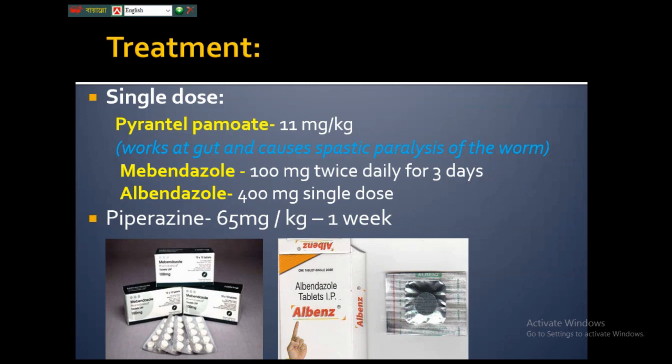For treatment, pyrantel pamoate at 11 mg/kg body weight is a very good drug. Alternatively, mebendazole 100 mg twice daily for three consecutive days can be used. The most common drug is albendazole 400 mg as a single dose. Sometimes the dose needs to be repeated to prevent reinfection or auto-infection.